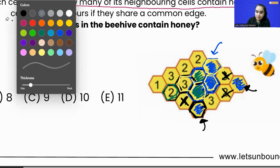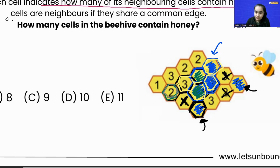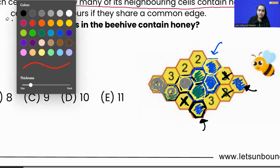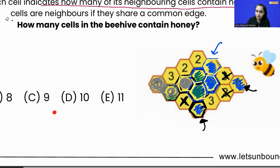But this number two — if we focus on it, it has only one neighbor which has honey right now. We need one more neighbor because two tells us two of its neighboring cells will contain honey. So we can add this one cell here, because it is also sharing a common edge.